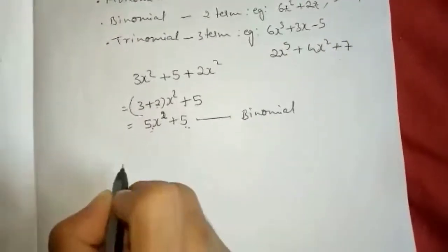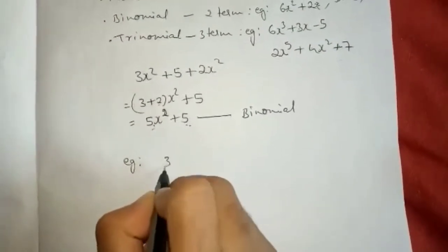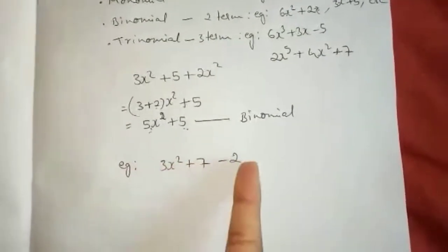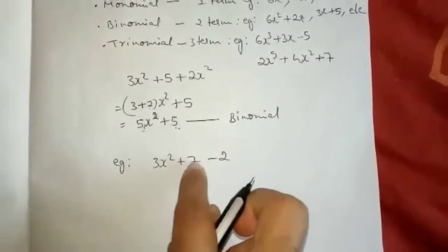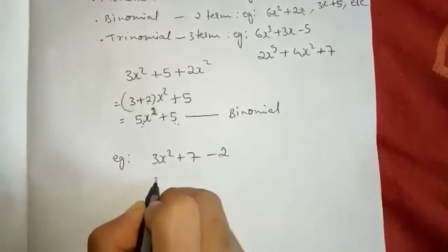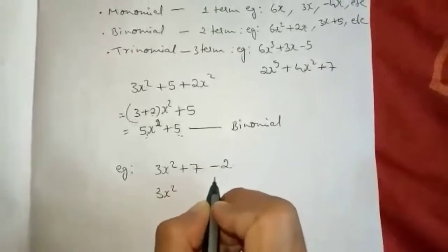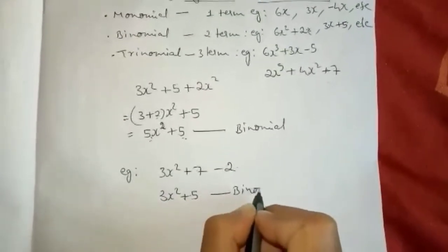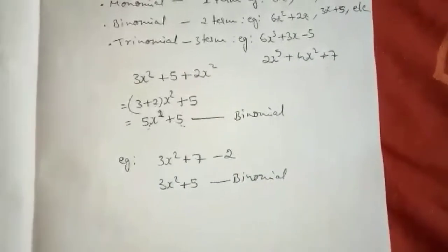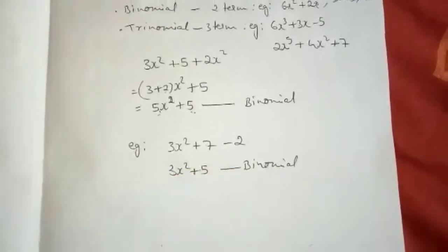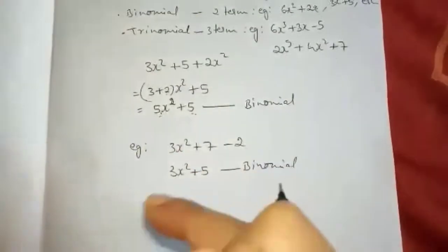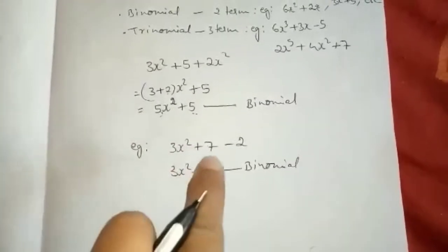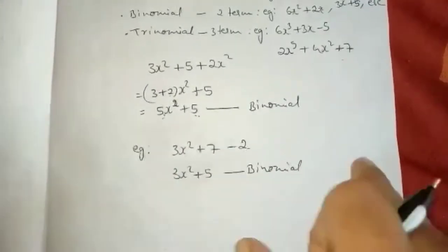One more example: 3x square plus 7 minus 2. While seeing, three terms are there. But see here, these two are constants, so we can simplify it. 3x square plus 7 minus 2 — how much will it be? Plus 5. So 3x square plus 5. So this is also binomial. You have to check whether it is in its simplest form; if not, convert it to simplest form first, then check.